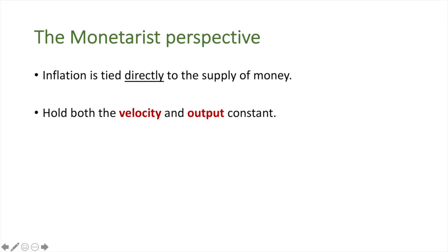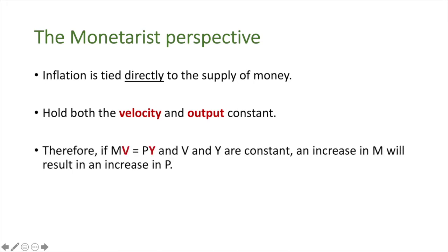They hold both the velocity and output constant. Therefore, if MV equals PY and V and Y are constant, an increase in M will result in an increase in P. If we solve for P, then P is equal to MV divided by Y. And remember, if V and Y are held constant, then the value of P is solely tied to the money supply.